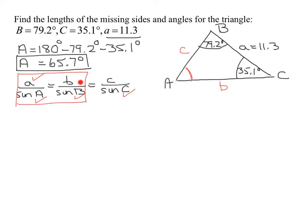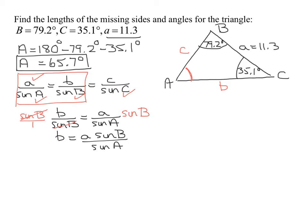Since I'm trying to find side B, I'll write B over sine B equals A over sine A. To solve for side B, I'll multiply both sides by sine B, giving me B equals A sine B over sine A.